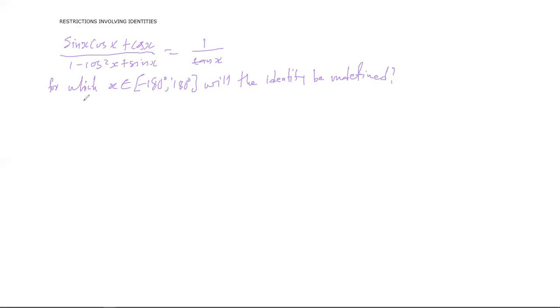Now, we know this very much in maths. We hate division by zero because that is what makes things to be undefined. Therefore, we're going to say, well, for this identity to be undefined, then 1 minus cos squared x plus sine x should be zero, but also tan x should be zero. That's it. Yeah, that's simple. That's how it is, guys. And then how do we go about this?